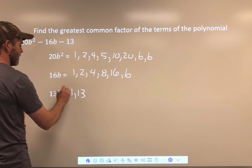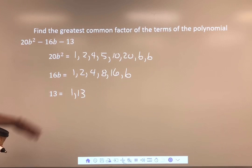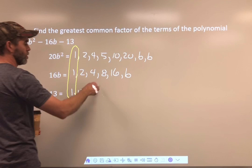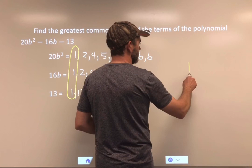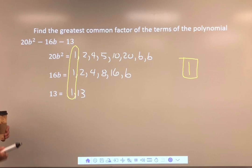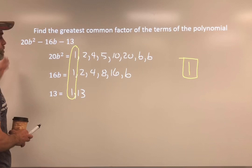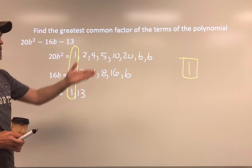The greatest common factor has to be a number they all share and the variables they all have. In this case, the greatest number they all share is 1. There are no B's in the 13 term, so we can't count variables. The greatest common factor is 1. If we're thinking ahead to the next assignment, we'd ask what can we divide them all by evenly — and in this case, the only answer is 1.